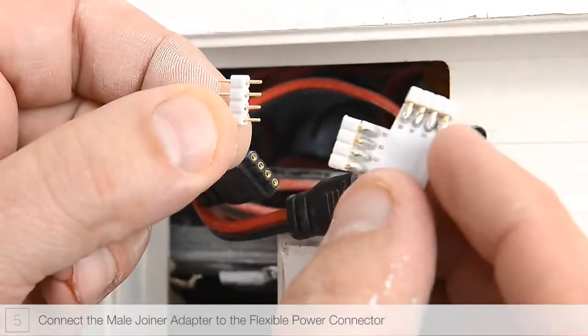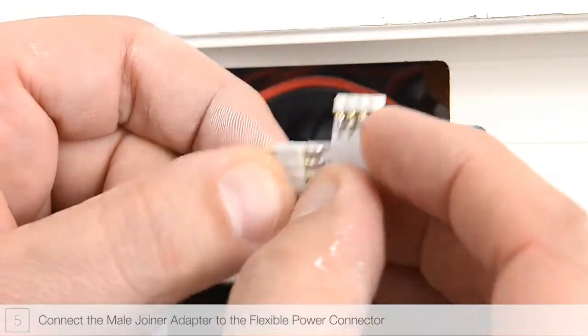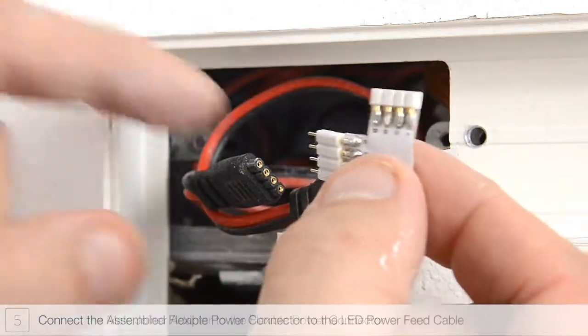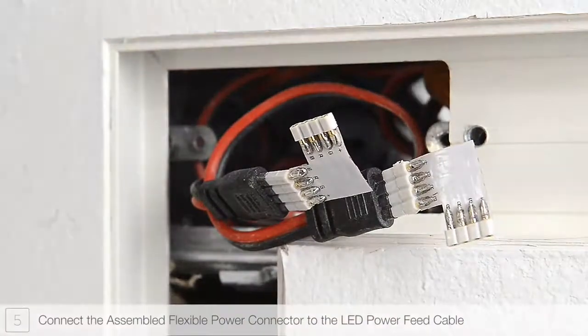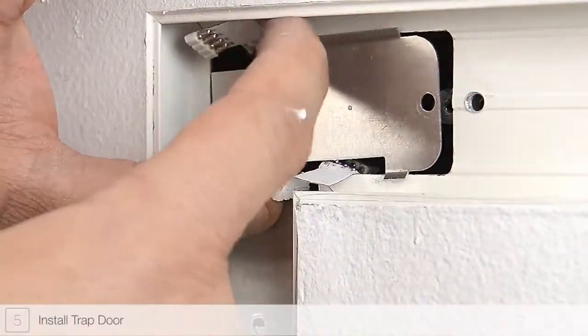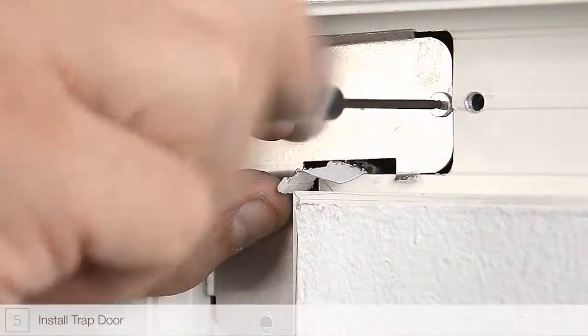Connect one male joiner adapter to one end of the second flexible power connector. Connect the assembled flexible power connector to the second LED power feed cable. Install and secure the junction box trap doors to the channel.